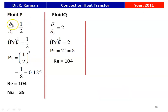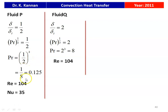For fluid P: δ/δ_T = 1/2. For fluid Q: δ/δ_T = 2. Using the relation δ/δ_T = Pr^(1/3): for P, Pr^(1/3) = 1/2, so Pr = (1/2)³ = 1/8 = 0.125. For Q, Pr^(1/3) = 2, so Pr = 2³ = 8. For both cases, Reynolds number is 10⁴ and for P, Nusselt number is 35.